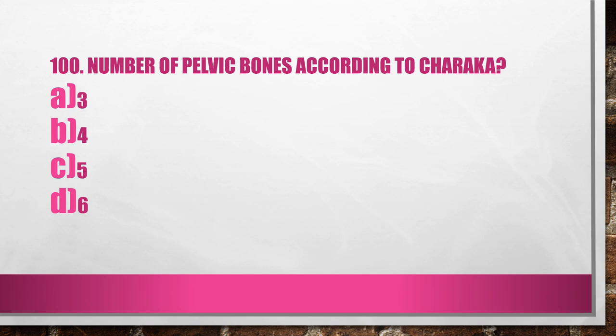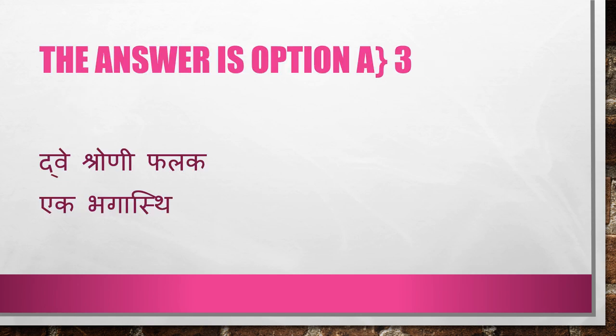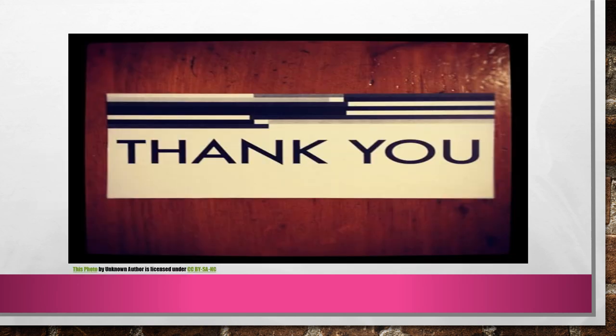Question 100. Number of pelvic bonds according to Charaka: A. 3, B. 4, C. 5, D. 6. The answer is Option A, 3 — Dvi Shroni Falaka, Ega Baakasthi. Thank you for watching our video and don't forget to subscribe.